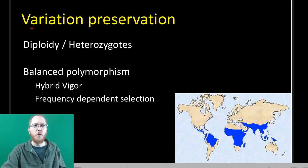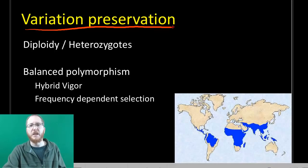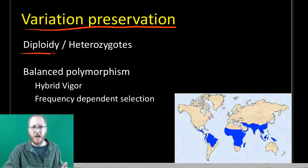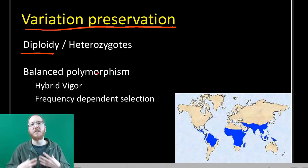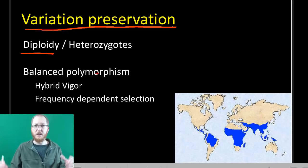And then as I brought up before, we want to preserve a lot of this variation that we have to make sure it's there if we need it later. Ways of doing this is diploids because we can have heterozygotes that contain a lot of these recessive alleles but don't express them so they don't have to die, even if it's negative at the time.